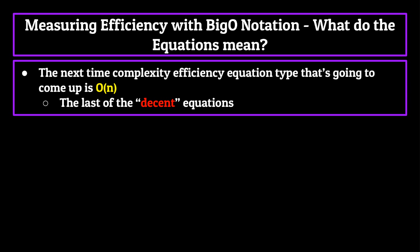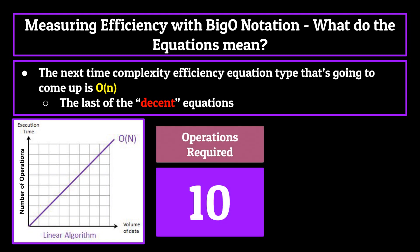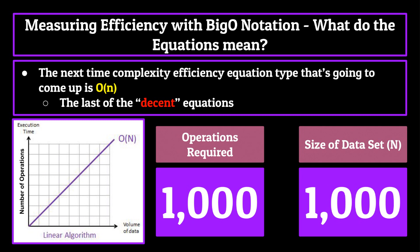O of n is the next common time complexity efficiency equation type that's going to come up during the series. The graph of volume of data versus number of instructions for this function is linear, meaning for every element you add to the data set, the amount of instructions needed to complete the function will increase by the same amount. So to perform a function with a time complexity of O of n on a data set with 10 elements, it will take 10 instructions; 50 elements will take 50 instructions; 1000 elements, 1000 instructions, and so on. O of n is really the last good efficiency equation that exists. Anything above this is considered inefficient and not very practical when it comes to data structures.